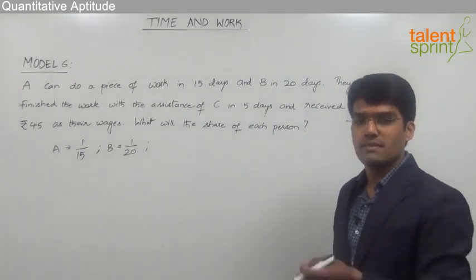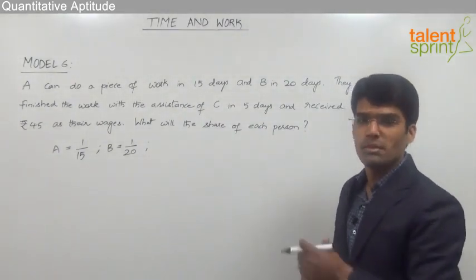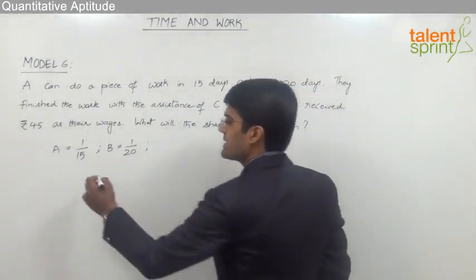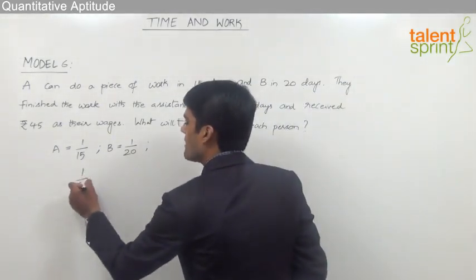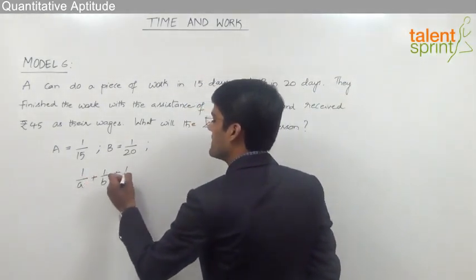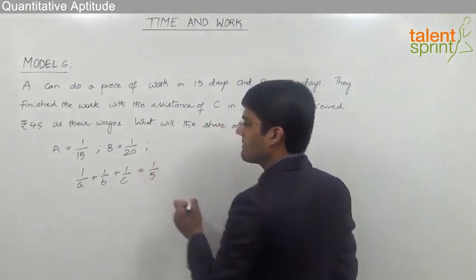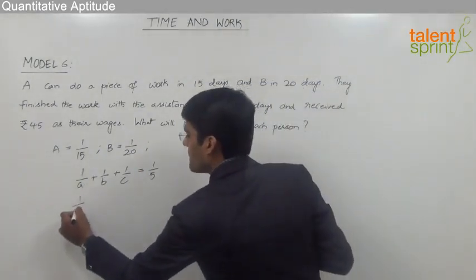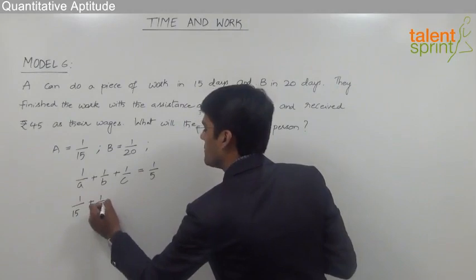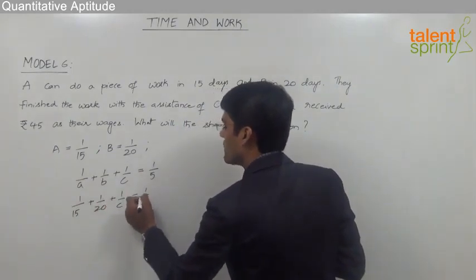So very clearly, 1/A + 1/B + 1/C should be equal to 1/5. So we can say that 1/15 + 1/20 + 1/C is equal to 1/5. So from this, 1/C will be 1/5 - 1/15 - 1/20.